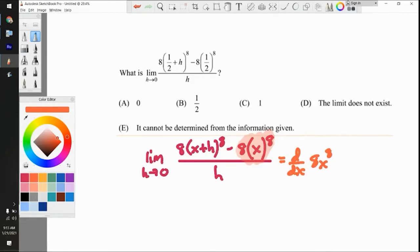Well, what is the derivative of 8x to the eighth? Can someone help me out here? 64x to the seventh, very good. So you bring the eight down, eight times eight is 64, you minus one from the power.